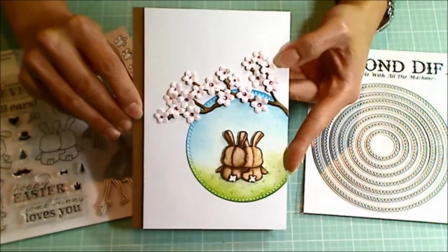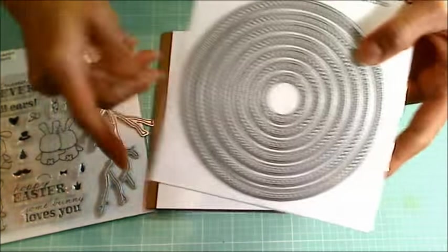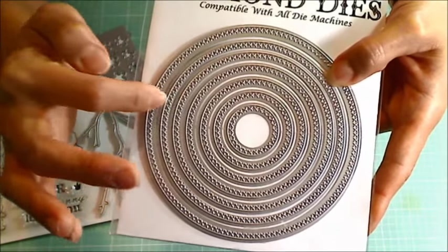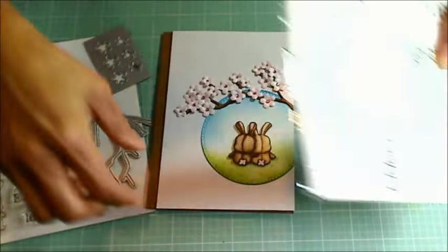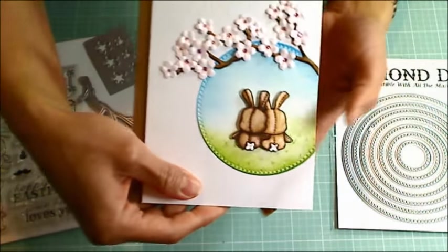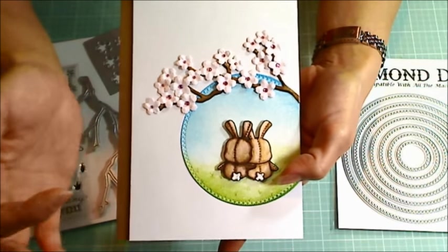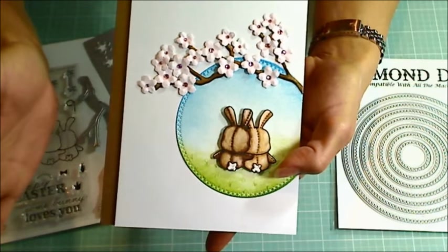And this is also a design team project for Diamond Dies. I got to use the brand new cross-stitched circle nesting die set. I used the third from the largest and I think that cross-stitching is such a wonderful addition to really kind of prim or cutesy cards. They add a kind of homespun feeling to them.